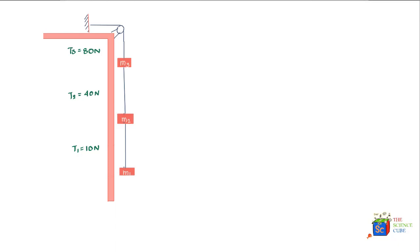Let's see what forces are acting on mass M1. We can clearly see that there is the force of gravity acting on M1, which is M1G. We can also see that M1 is being pulled up by tension T1 — because if tension T1 was not there, M1 would have just dropped. So there is definitely a force pulling mass M1 up, and that's tension T1.